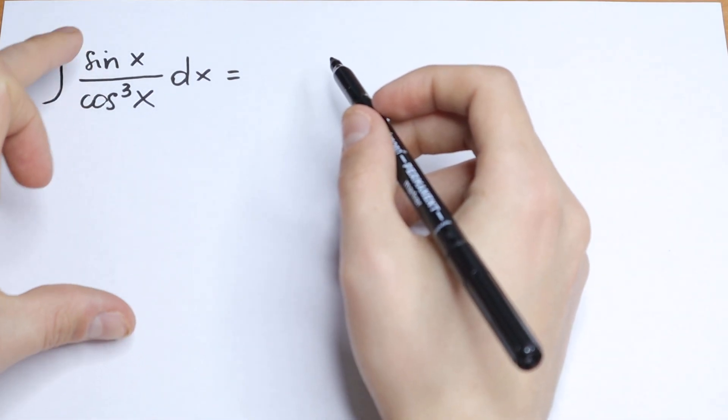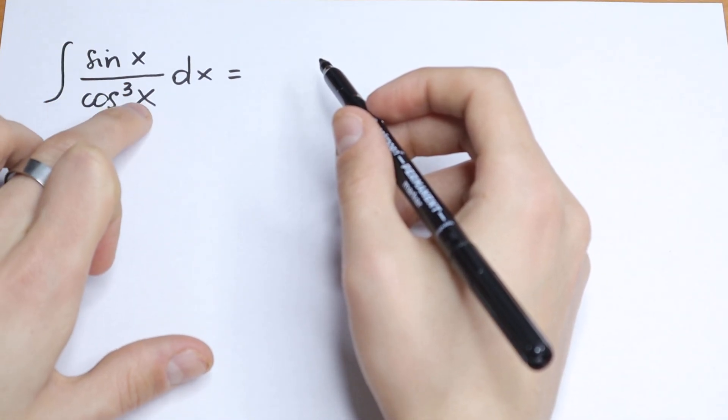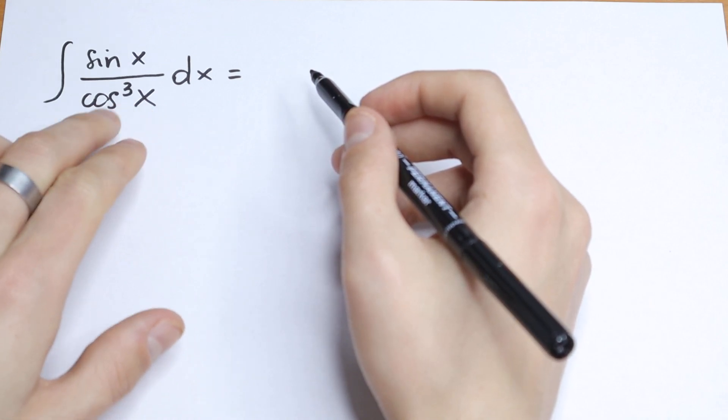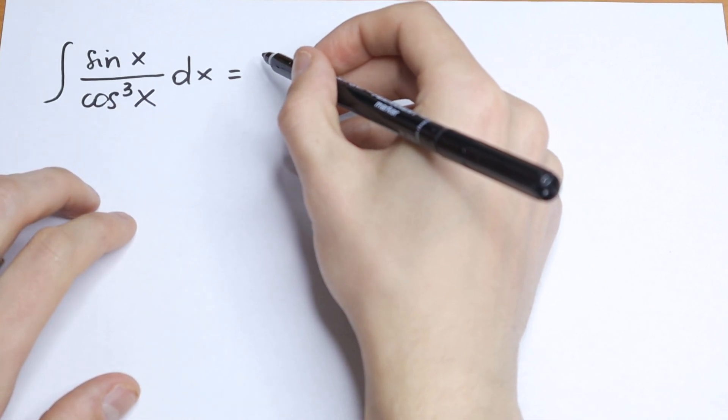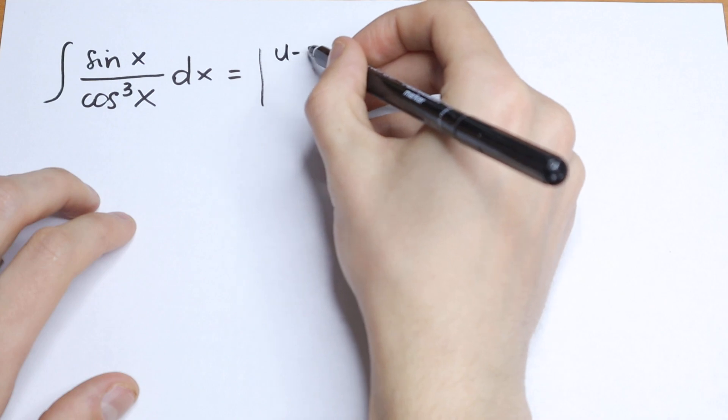On the first side, this integral is really hard because we have a sine, cosine, we have a third power, but I want to recommend to use a u-substitution right here. So let's use u-substitution.